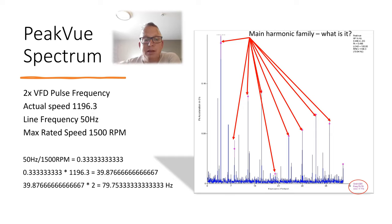Gives us 79.75 hertz, which is this frequency here. So we can know that this here is not a bearing defect, it's your two times pole frequency.